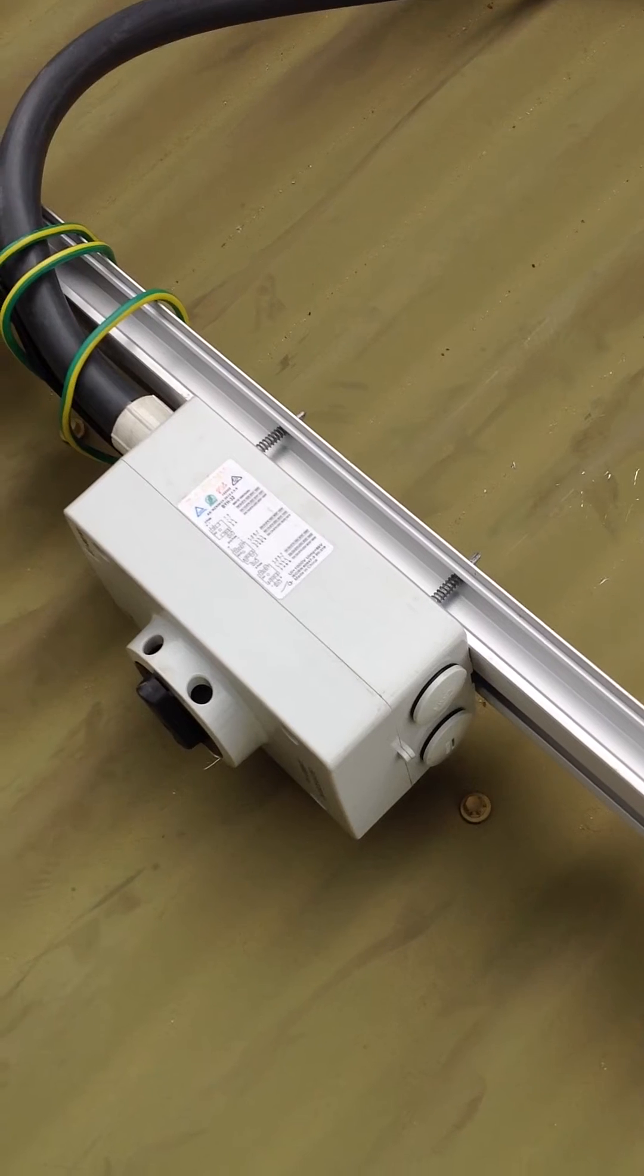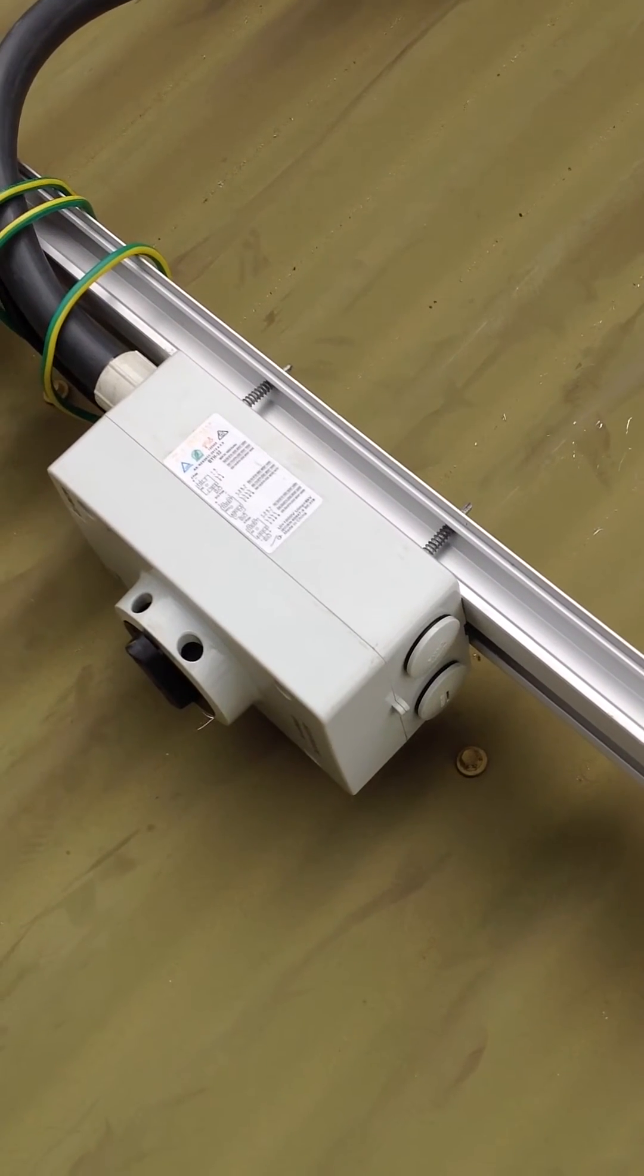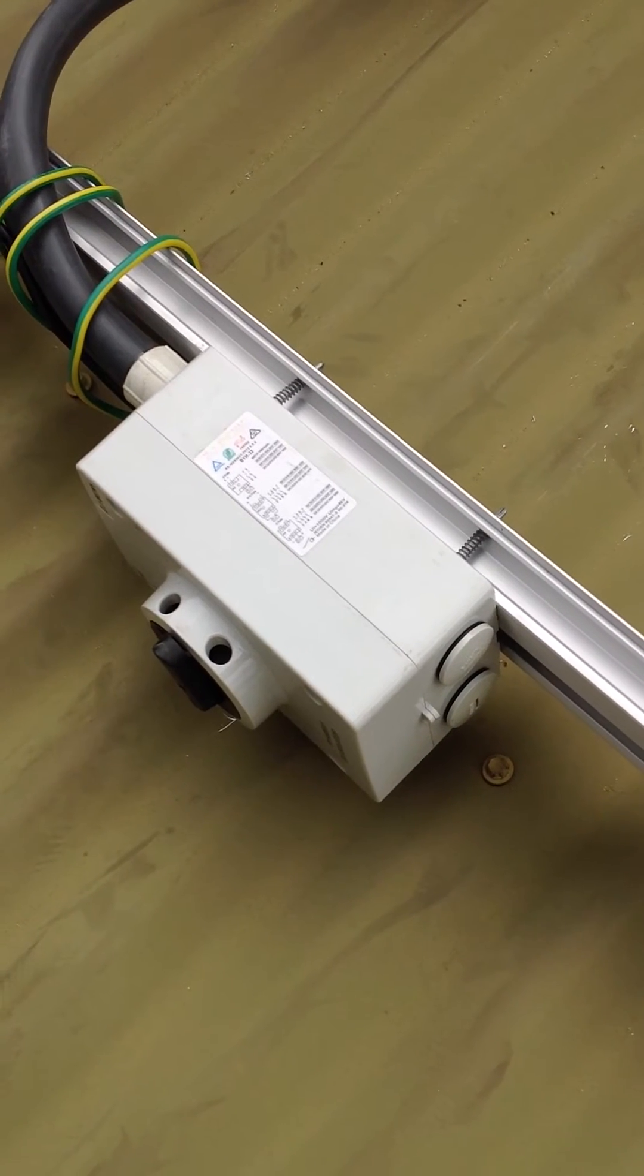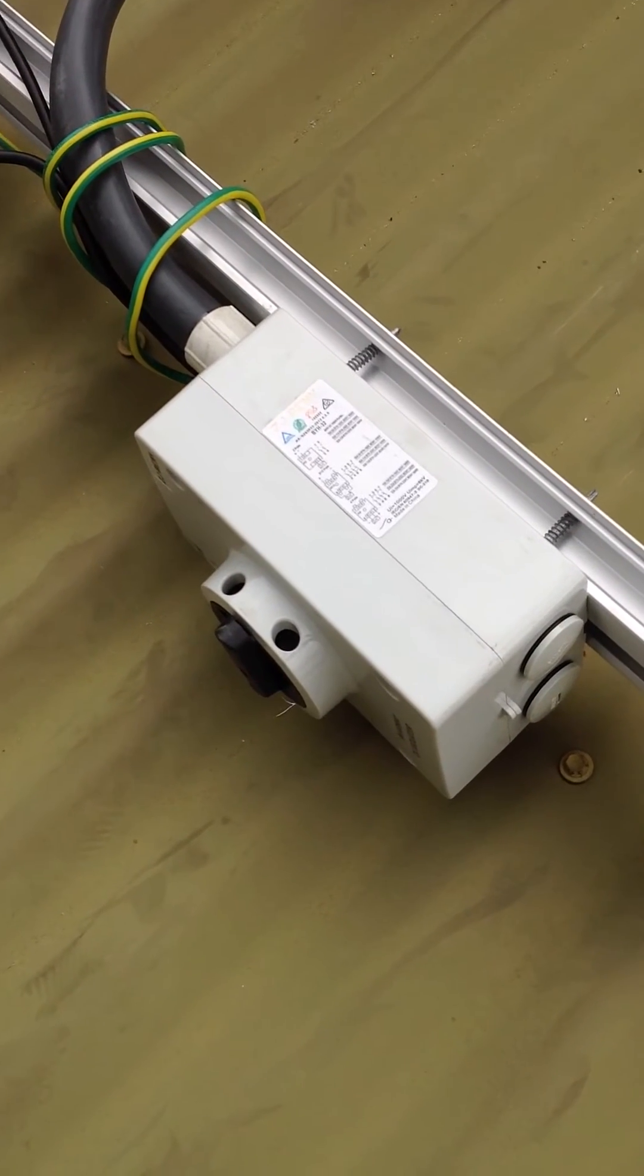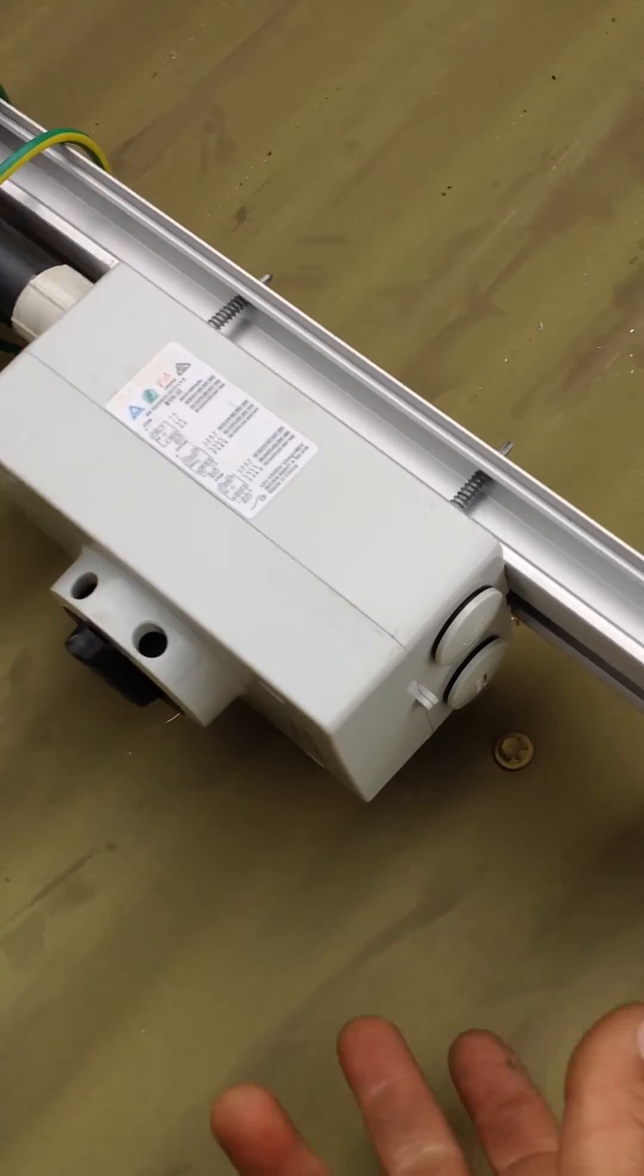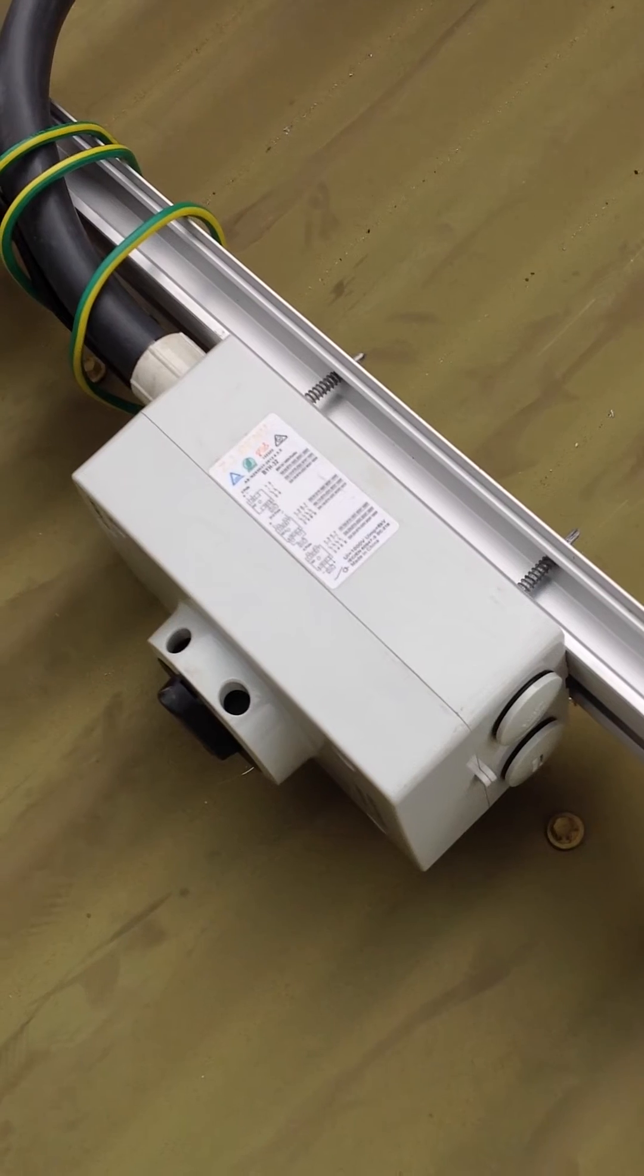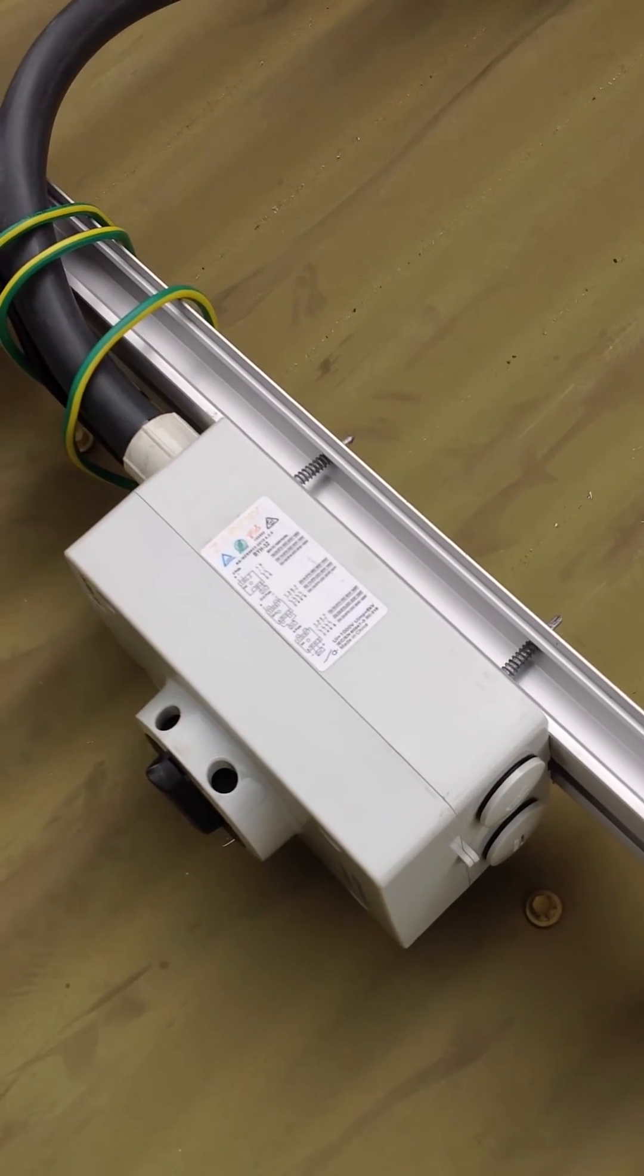The beauty of putting it under the array is it's out of UV, it's out of direct water ingress. What we've also done has drilled a couple of little weep holes underneath, two weep holes, no more than 3mm, to let that water flow out of the box if it condenses, heats up, sweats.